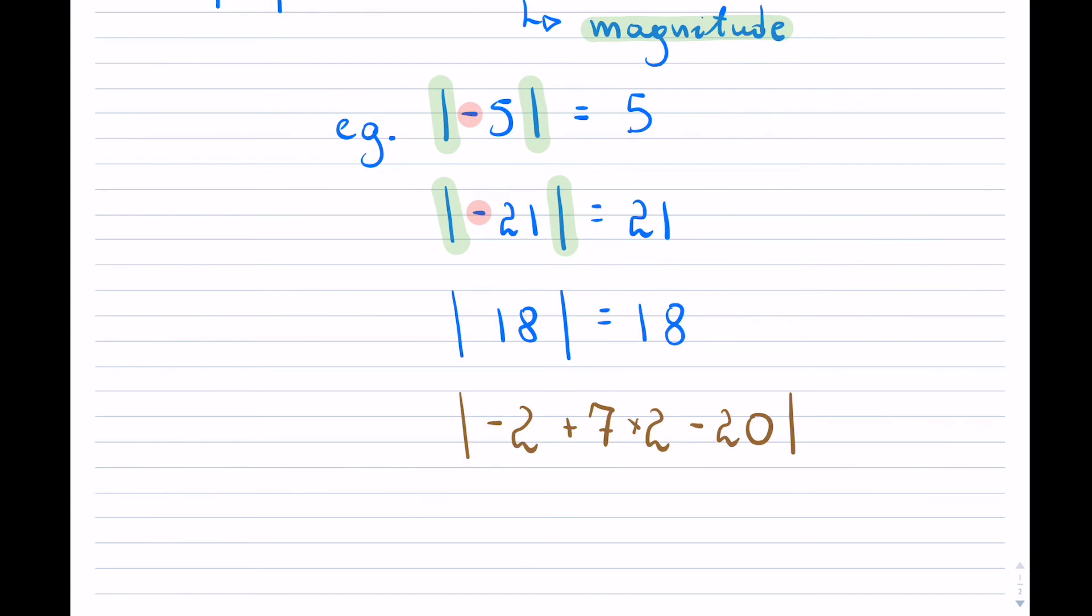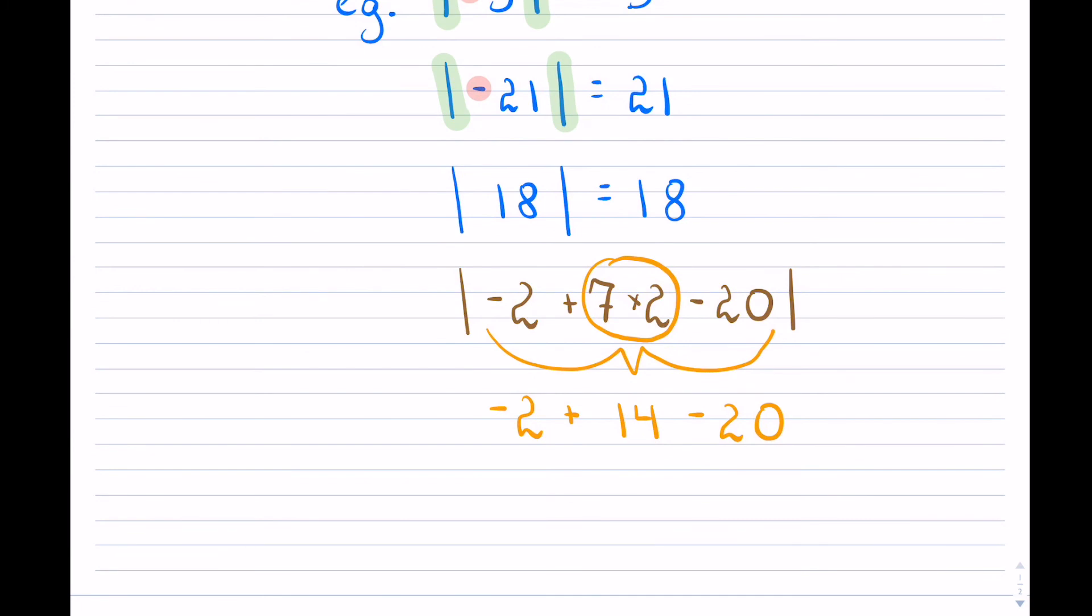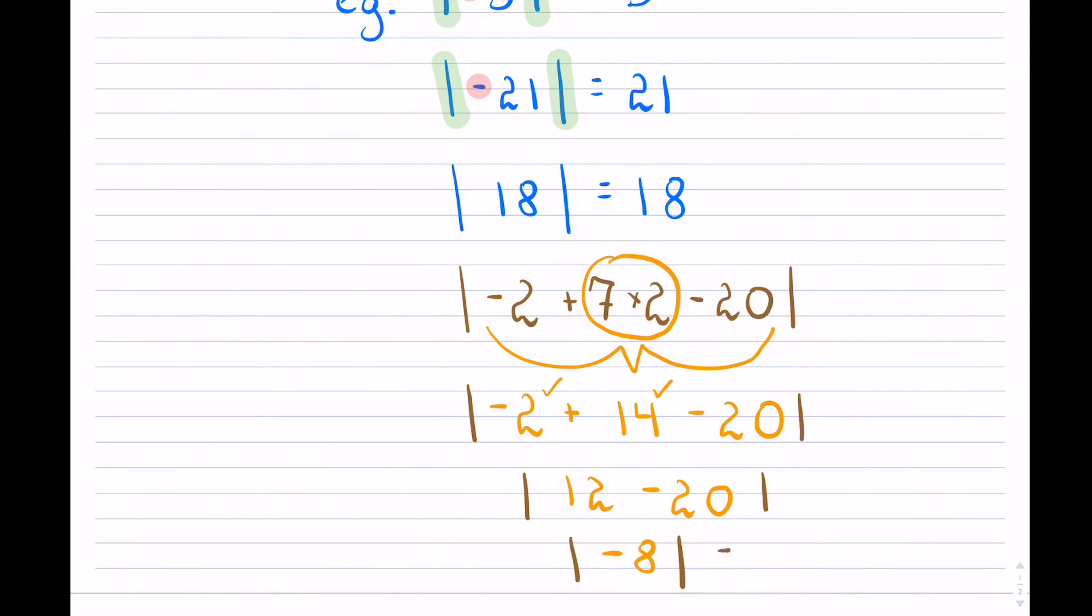Let me compute this for us. You would first have to find everything within the bracket. So my answer: negative 2 plus, now 7 times 2, that's 14, and then minus 20. If I compute that, negative 2 plus 14 is plus 12, and 12 minus 20 is negative 8. But because we had this all in absolute values, your answer would actually be 8.